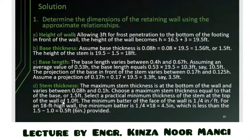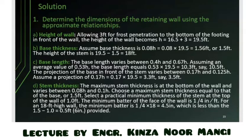First we will find the dimensions of the retaining wall, then check it against the factors causing failures. In a retaining wall there are three failure modes: overturning, sliding, and soil bearing capacity. We have to check for these three things to determine whether the structure can sustain them or not.